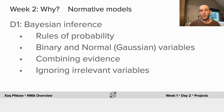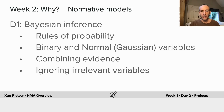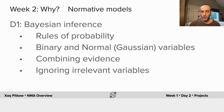In Bayesian inference, you'll cover the rules of probability and how you use them. The running examples you'll see will be binary variables and normal or Gaussian variables. You'll learn how you can optimally combine evidence from different sources and optimally ignore irrelevant variables as well.